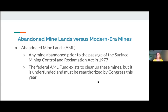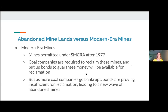The next category is modern era mines — basically those are any mines that received their mining permit under SMCRA, meaning any mines that started after 1977. Through SMCRA, these mines have certain requirements that the pre-1977 mines didn't have. Coal companies are required to reclaim these mines and are also required to put up bonds to guarantee that money will be available for reclamation. That way, if the coal company goes bankrupt or otherwise doesn't complete the reclamation, there is money available to state and federal regulators to make sure the reclamation gets done. The system in theory is a good one, but over the last five to ten years we've seen some problems that are really coming to a head.